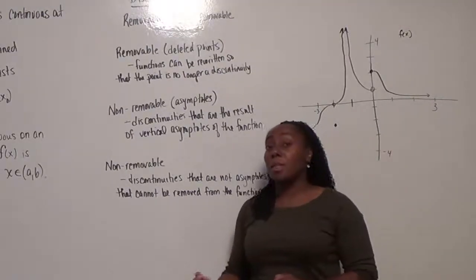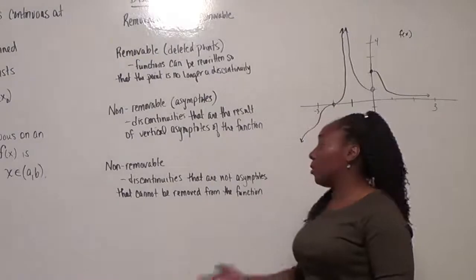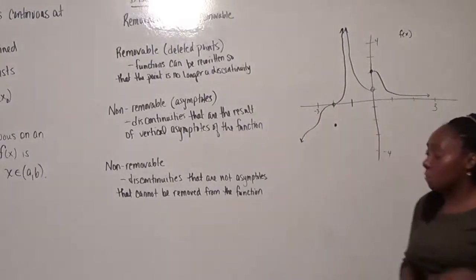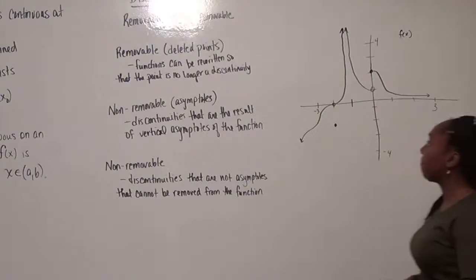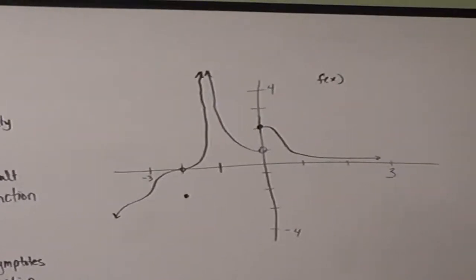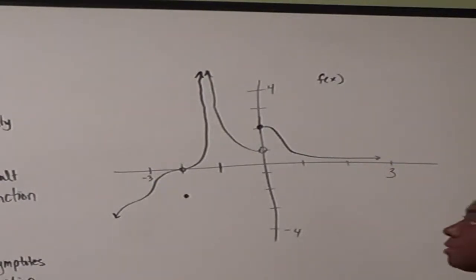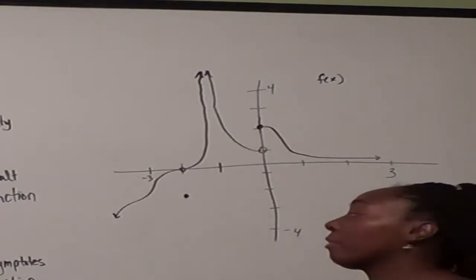We can't remove the deleted points, and we can't get rid of the asymptotes. So those would be just non-removable discontinuities. Here's a general picture of just an arbitrary function, and here we're going to show just a couple different types of discontinuities that we can see in terms of the picture of the graph.